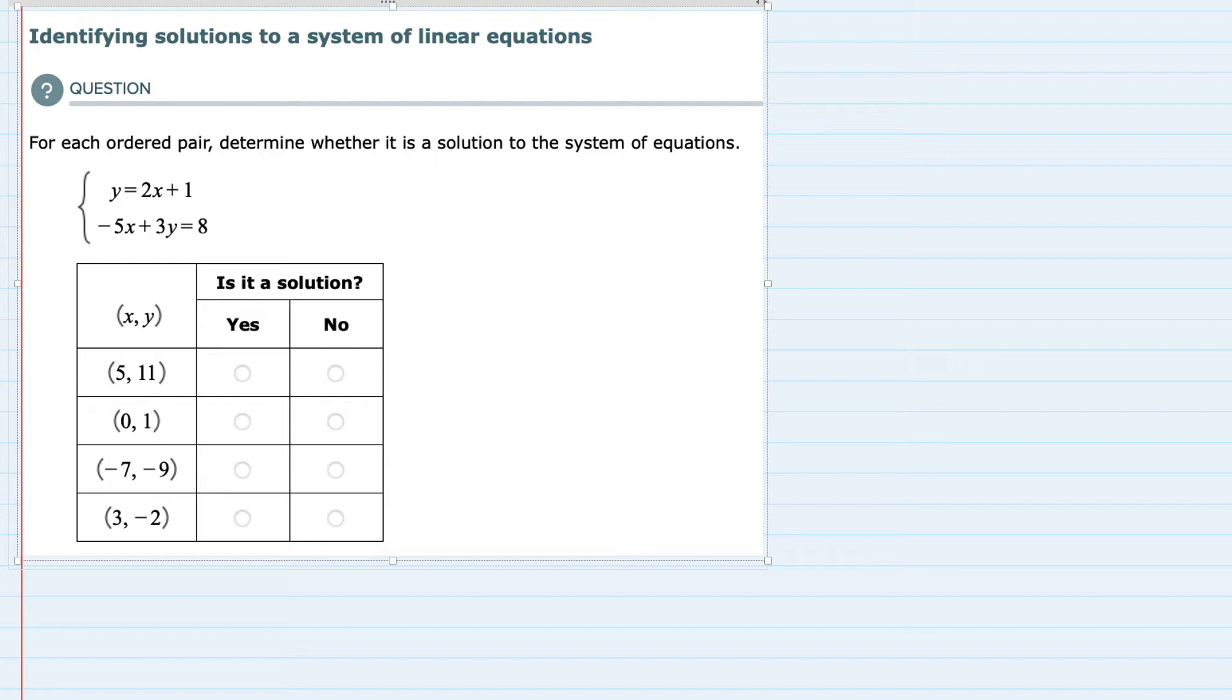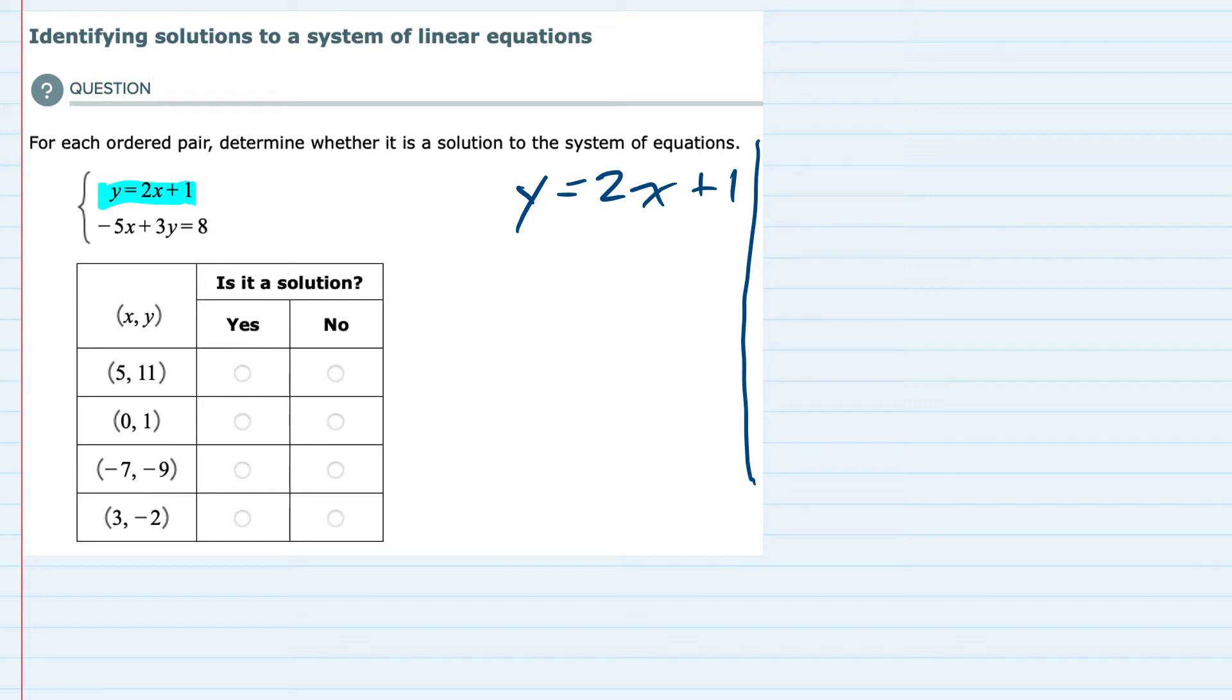So our approach is going to be to take those potential solutions and plug them in to each equation to see whether or not they work. I'm going to write each one of these equations again over on the right hand side and color code them a bit so that we'll be able to tell them apart. Then I'll take each solution and plug it in to test it.